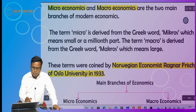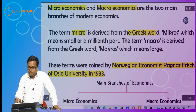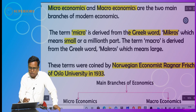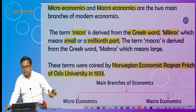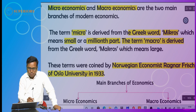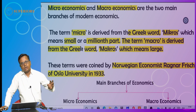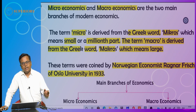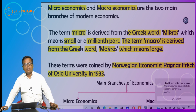The word micro in English is derived from the Greek word micros, which means small or a millionth part — that is, a very very small part. The term macro is derived from the Greek word macros, which means large or big. So the branch of economics which deals with individual or small economic units is called microeconomics, and the branch dealing with large economic units is called macroeconomics.